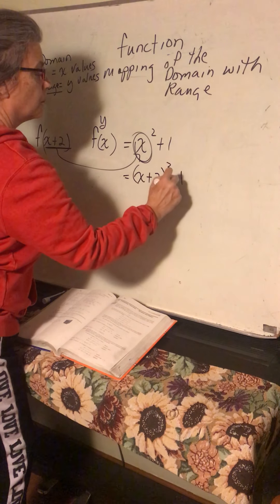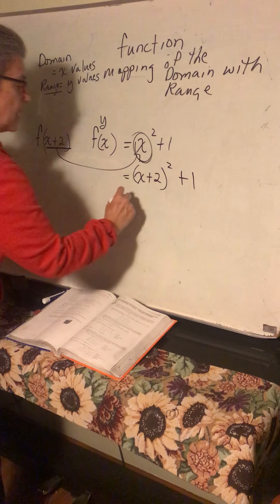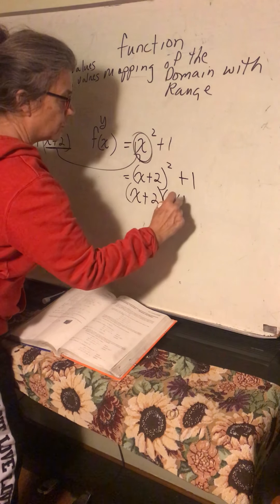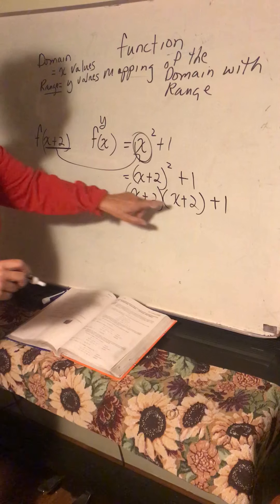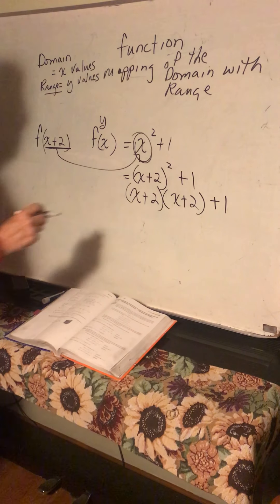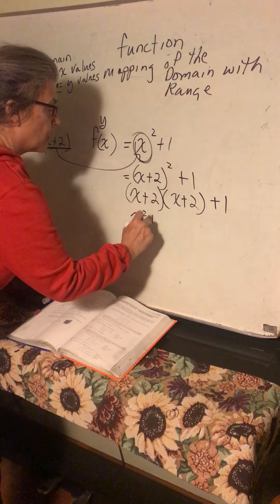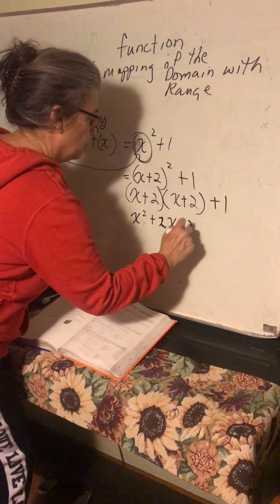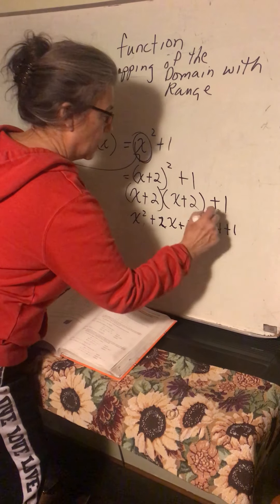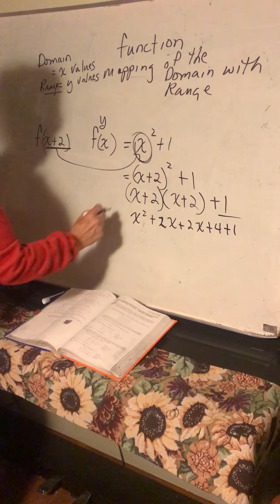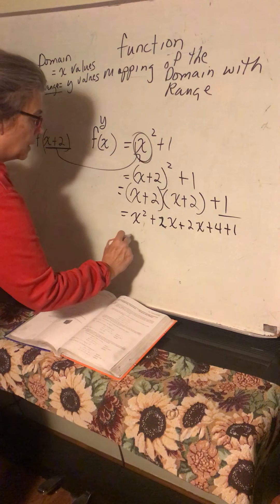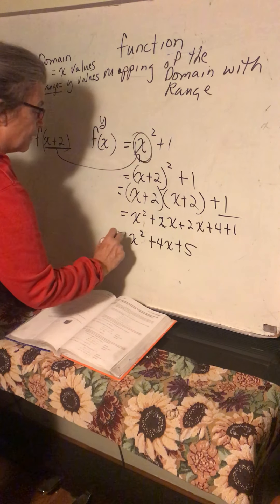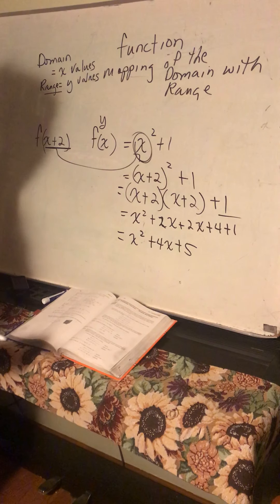You put x plus 2 in for x, so it becomes (x plus 2) squared plus 1. That means x plus 2 times x plus 2, and you multiply those by distributing. You get x squared plus 2x plus 2x plus 4 plus 1 — don't forget the 1 — which equals x squared plus 4x plus 5. That's as far as they want you to go.